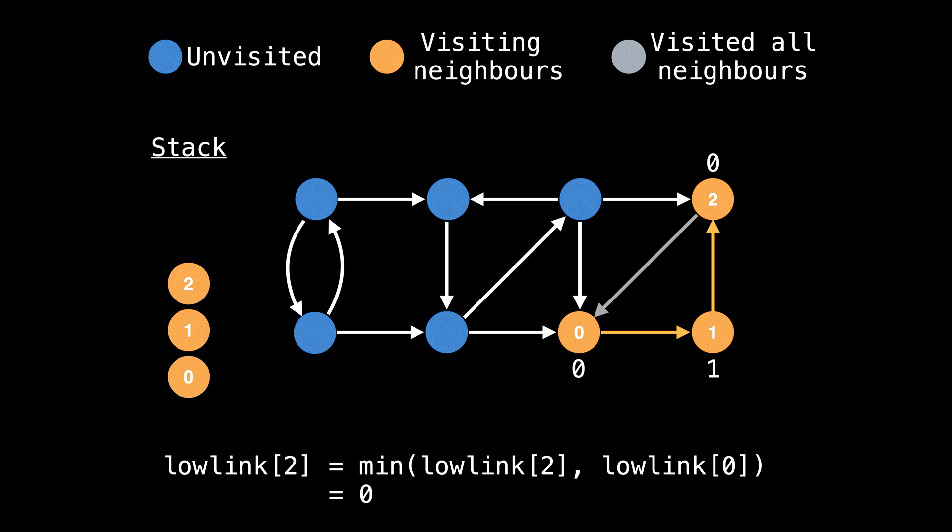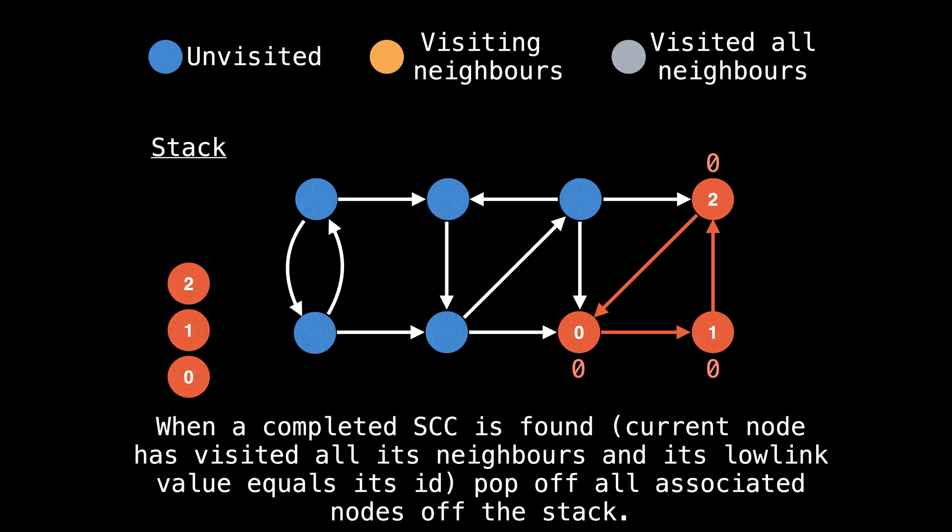So now we backtrack. On the backtracking, since node zero is on the stack, we take the minimum of the current node's low-link value and node zero's low-link value. Similarly, now min the low-link value of node one with node two, and also the same for node zero. Upon returning back to node zero, we realize that we've actually finished a strongly connected component, since we visited all the neighbors of node zero and its ID is equal to its low-link value. This means we need to remove all the nodes associated with a strongly connected component from the stack.